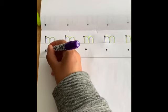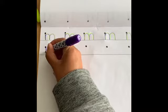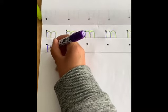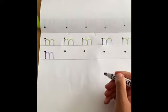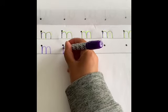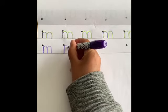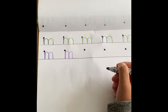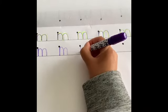And then remember to say the rhyme as you're writing it. So we say Maisie, mountain, mountain. Maisie, mountain, mountain. Now you keep saying that rhyme as we go along.